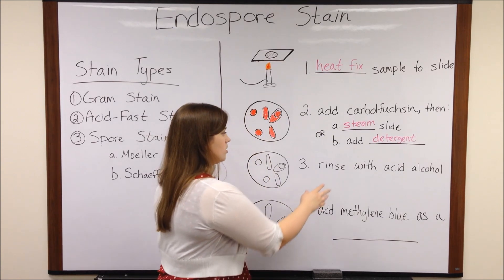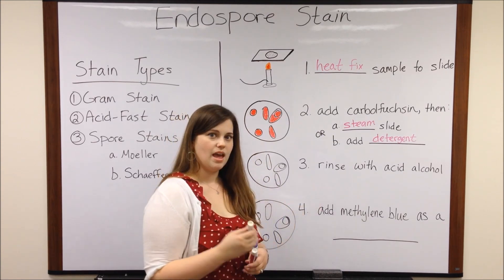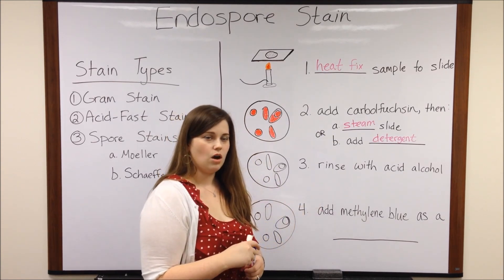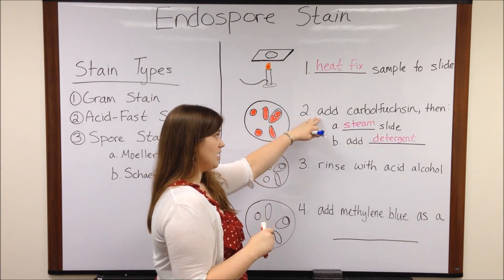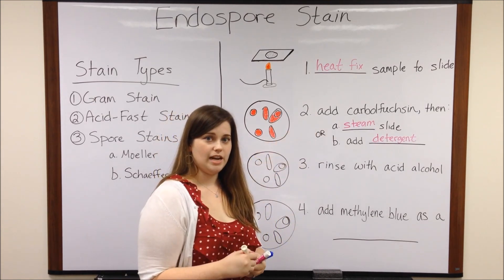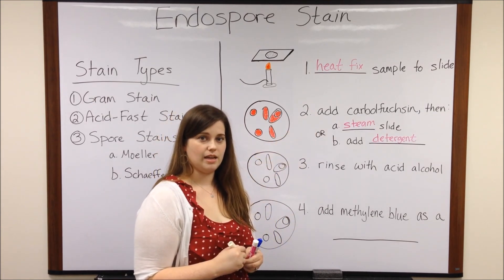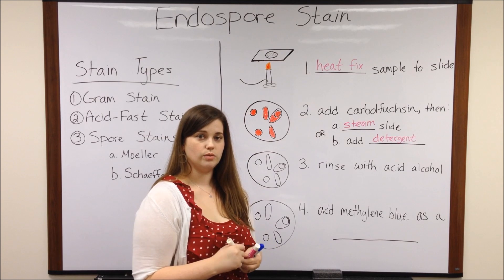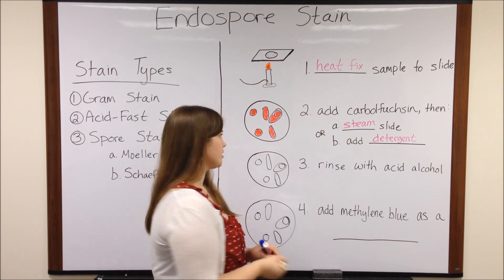Next, you rinse with acid alcohol. The acid alcohol will cause the stain to leave the vegetative cells but still adhere to the endospores.